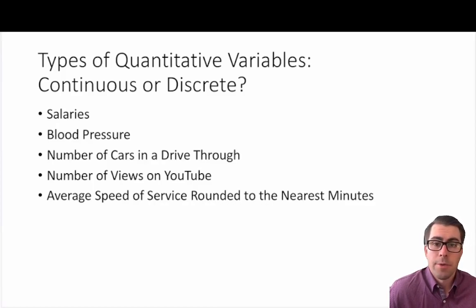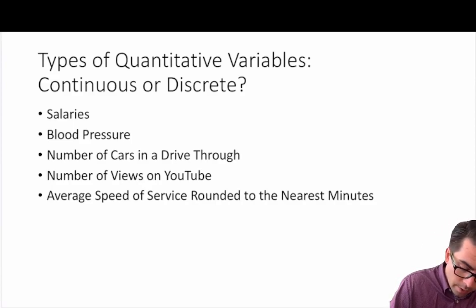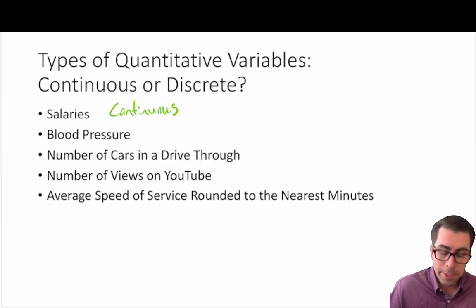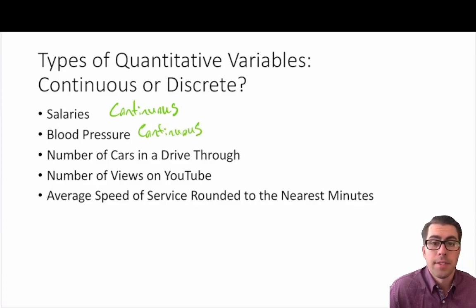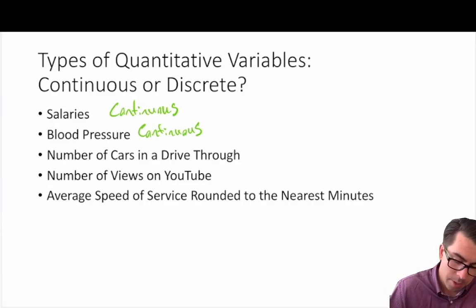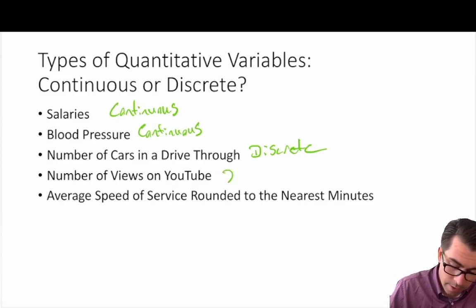So let's go ahead and look at our quantitative variables and label them as either continuous or discrete. Salaries — we typically measure to dollars and cents, but monetary worth can be measured to an infinite number of decimal points, so we label this as a continuous measure. Blood pressure is the same — a continuous measure, simply limited to the sensitivity of the measurement device. The number of cars in a drive-through — you won't have 2.5 cars, you'll have one, two, three, or six — a countable number of values, so we label this discrete. The number of views on YouTube is also a countable number of values, so we label this discrete.